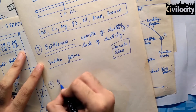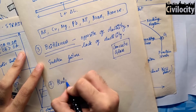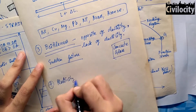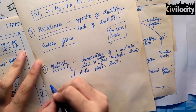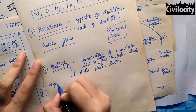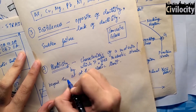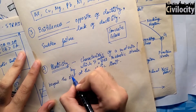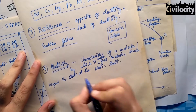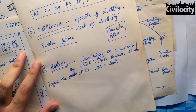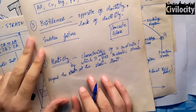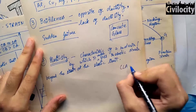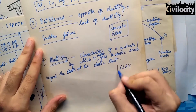Our next topic is plasticity. Plasticity means that if we try to deform any material, it will never come back to its original position. By definition: the characteristic of a material by which it undergoes inelastic strain beyond the strain at the elastic limit is known as plasticity. A good example is clay — if we mold clay, it will never come back to its original shape.